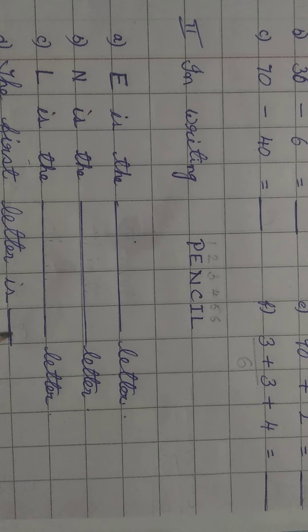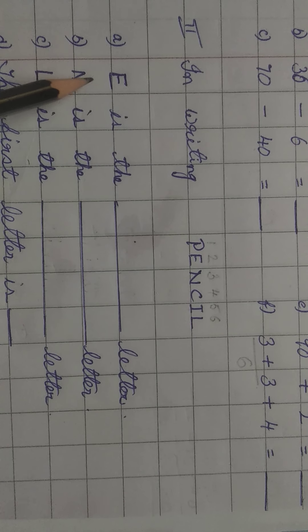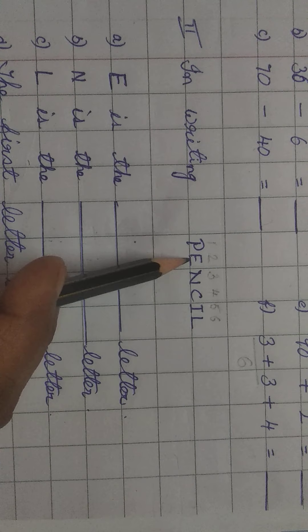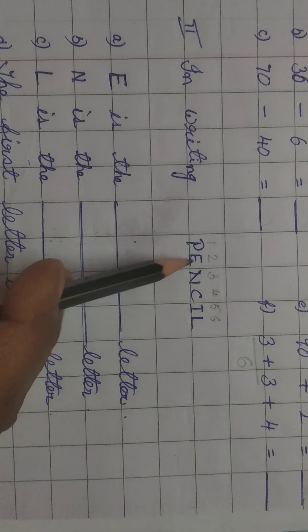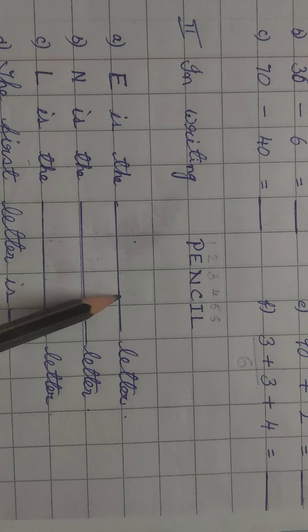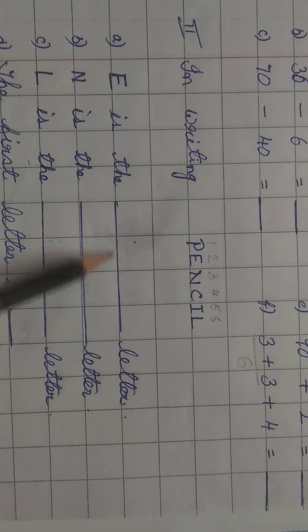So E is the dash letter. E is which letter? In which place is E there? In second place. You have to write second here. E is the S-E-C-O-N-D second L-E-T-T-E-R letter. E is the second letter.